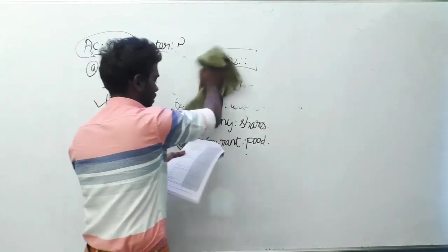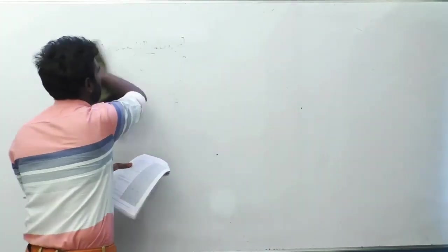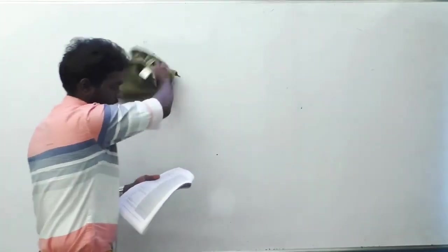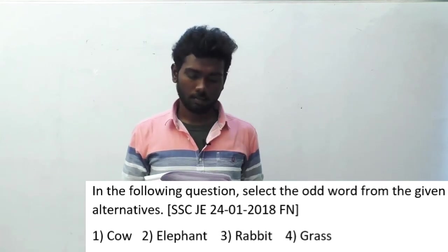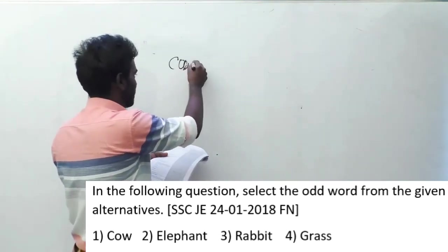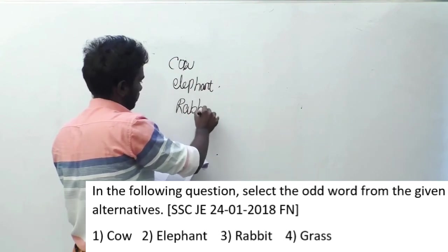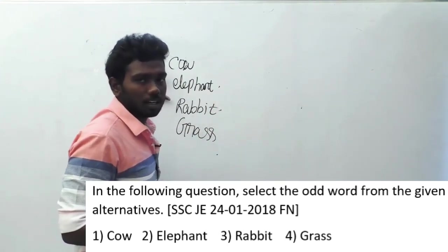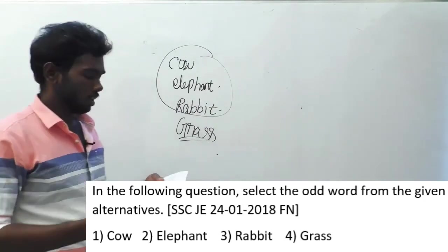Question number 167. In the following question, select the odd word from the given alternatives. This question was asked in SSC JE, 24th January 2018, forenoon session. Options are: cow, elephant, rabbit, grass. Cow, elephant, and rabbit are all animals. The fourth one, grass, is a plant. So grass is the odd word.